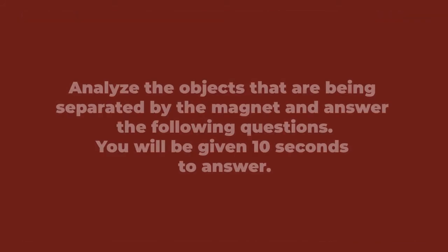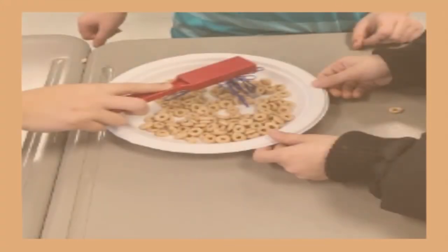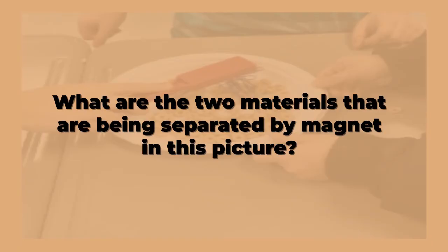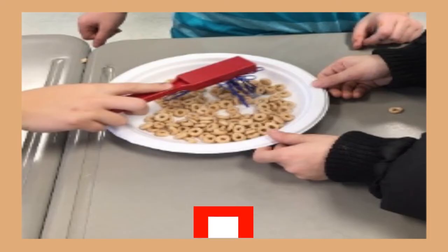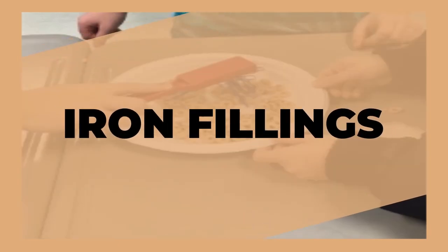Children, analyze the objects that are being separated by the magnet and answer the following questions. You will be given 10 seconds to answer. Number 1: What are the two materials that are being separated by magnet in this picture? Iron fillings are separated from the beads using magnet.